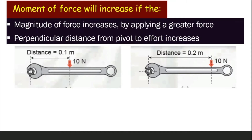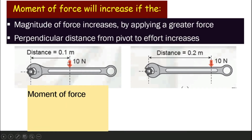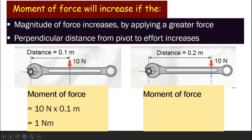If your hand is 0.1 meters from the nut: moment of force = 10 N × 0.1 m = 1 N·m. If your hand is further away: 10 N × 0.2 m = 2 N·m — double the moment of force. So the greater the distance of the force from the pivot or fulcrum, the greater the moment of force you will get.